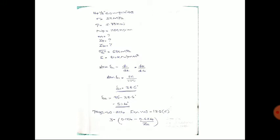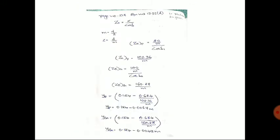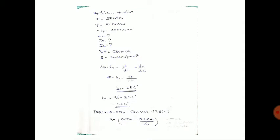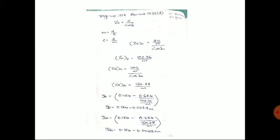Moving to page 218, we note that the Lewis form factor will be discussed shortly. On page 218 we find the equivalent number of teeth, also called formative number of teeth.